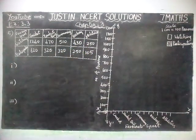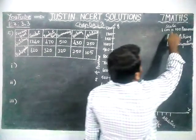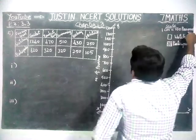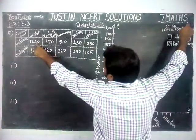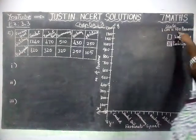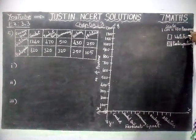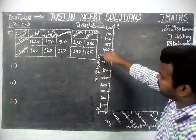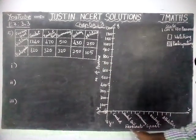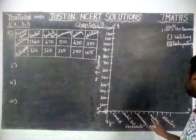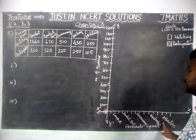Now we are going to draw it in that graph. Here, we have taken scale equal to 1 cm equal to 100, because it is going up to 1240. So we are taking 1 cm equal to 100 in the y-axis. In the y-axis, we have taken number of persons. On the x-axis, we have taken favorite sport — cricket, basketball, swimming, hockey, and athletics.